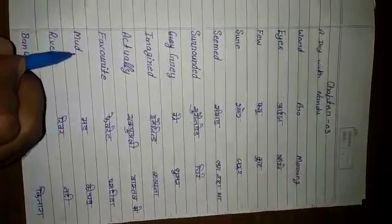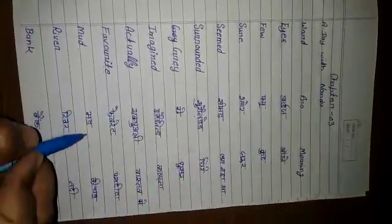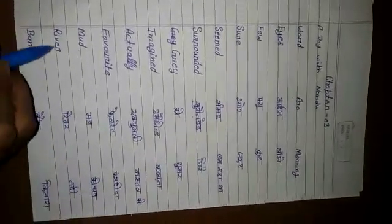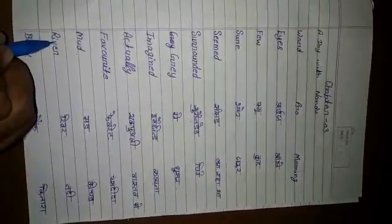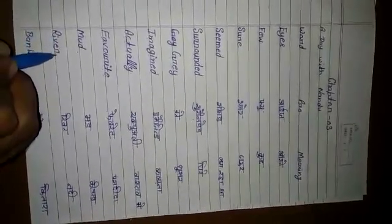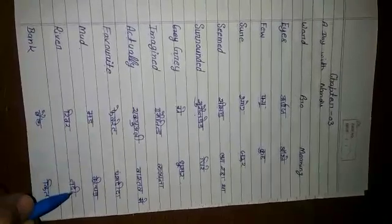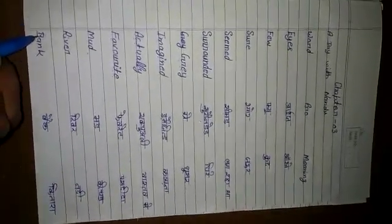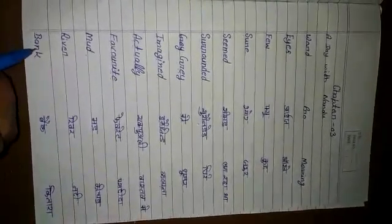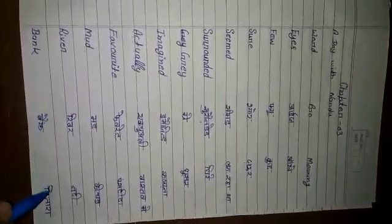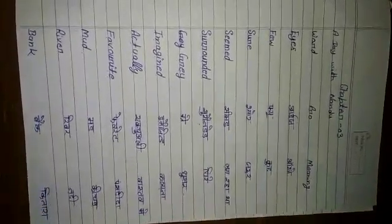M, U, D — Mud. Mud means Keechard. R, I, B, E, R — River. River means Nadi. B, A, N, K — Bank. Bank means Kinarah.